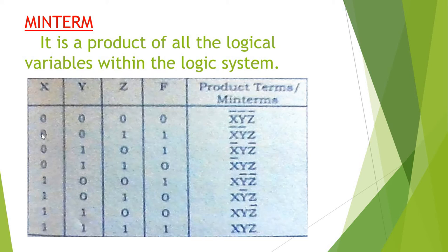For the second case: zero, zero, one — meaning x is zero, y is zero, z is one. We represent that as x-bar, y-bar, z. One means the variable itself, so z stays as z. That gives us x-bar, y-bar, z.